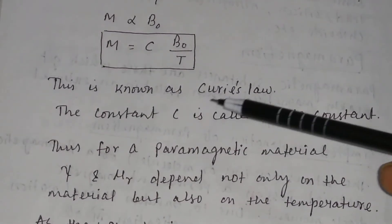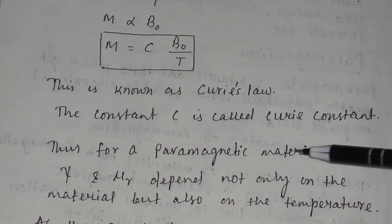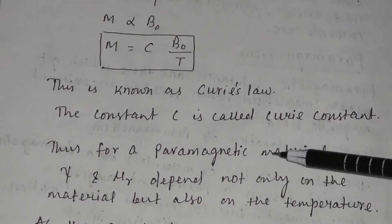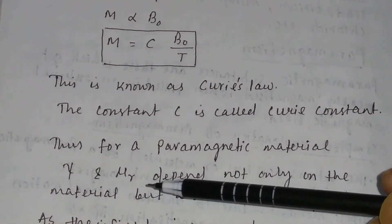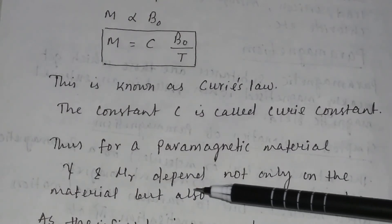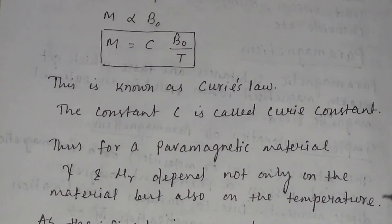This is known as Curie's law. The constant C is called Curie constant. Thus, for a paramagnetic material, the susceptibility xi and the relative permeability mu r depends not only on the material but also on the temperature.